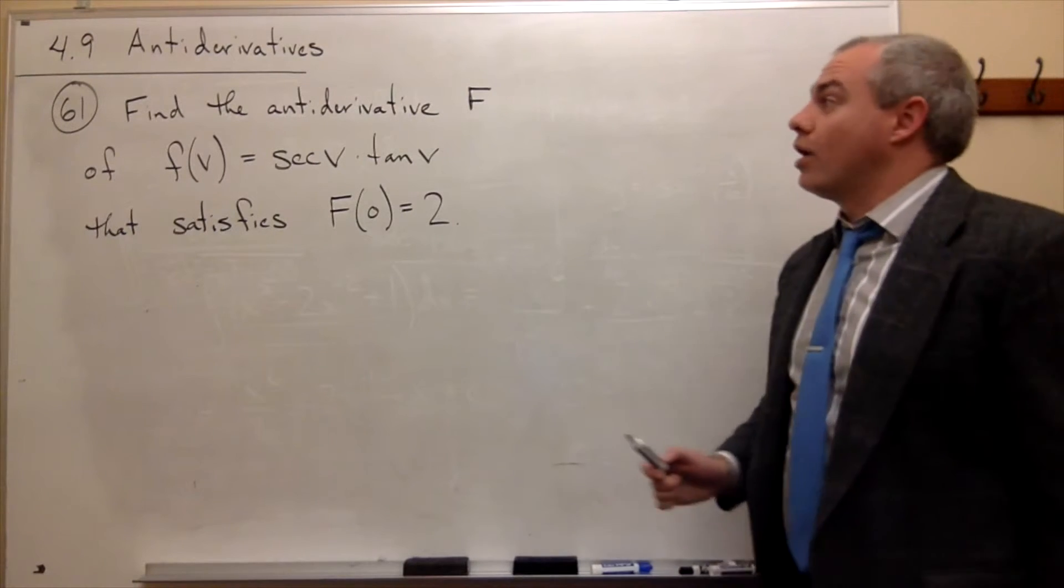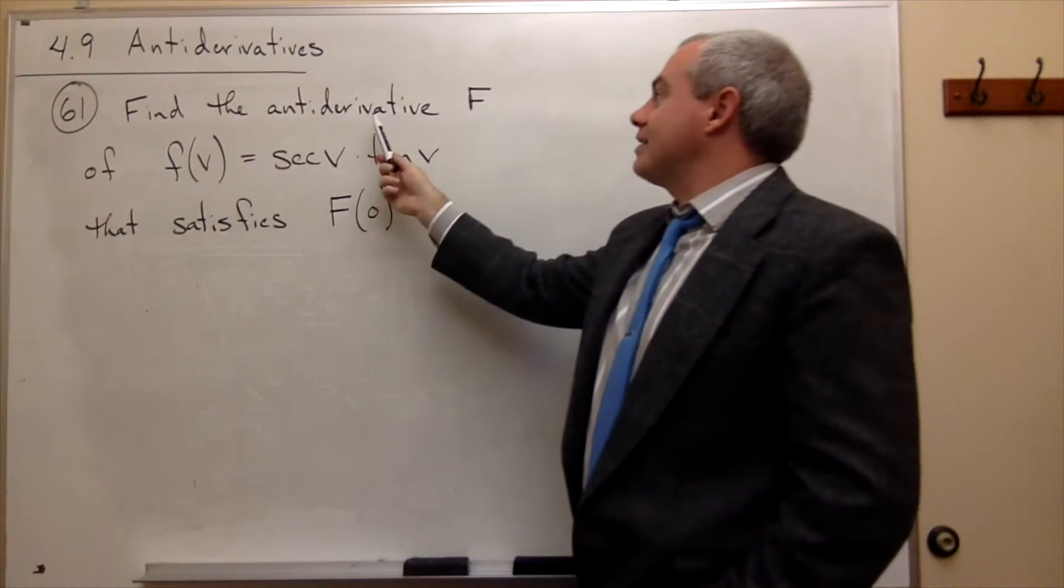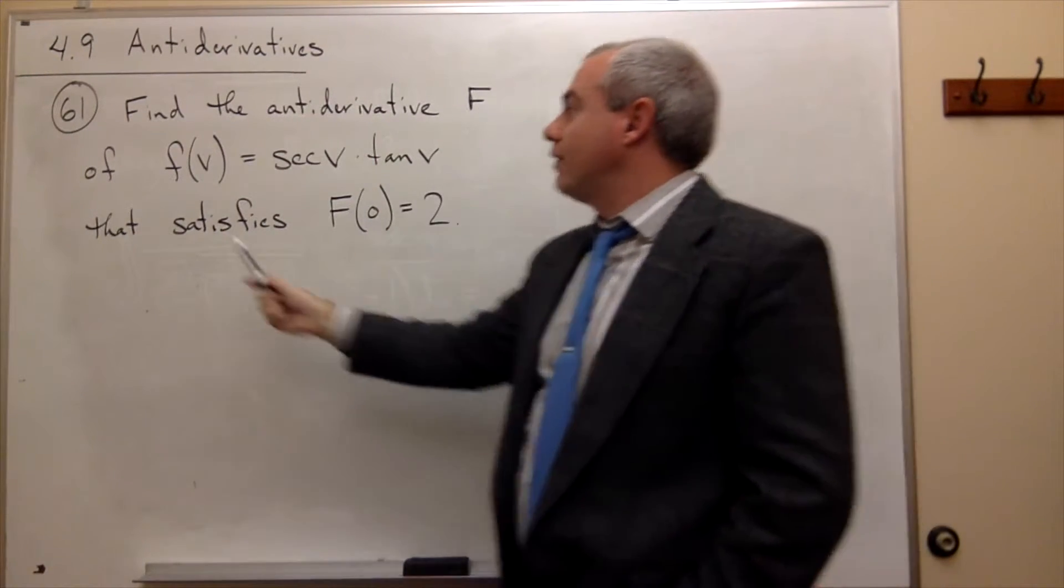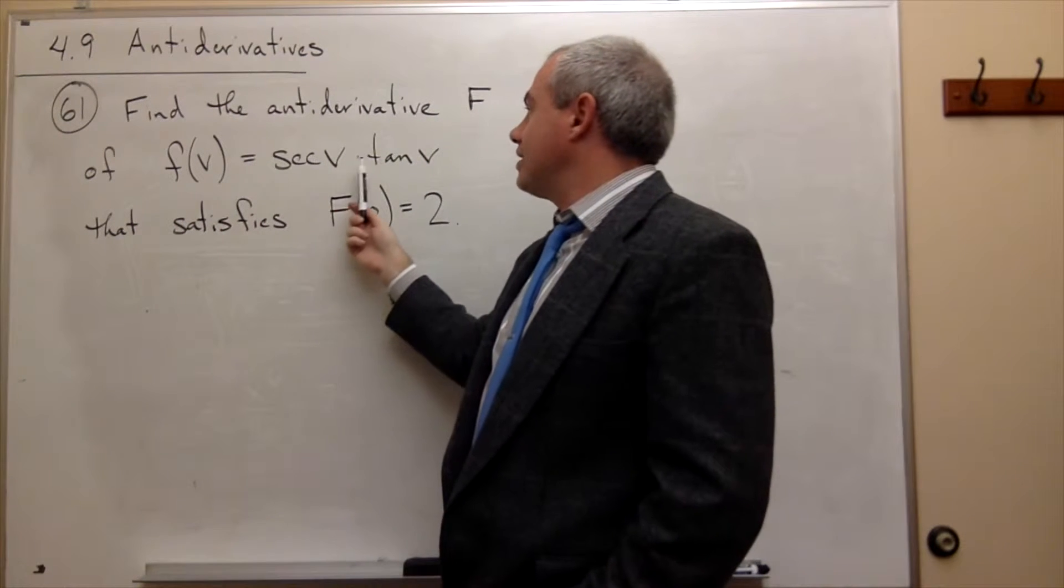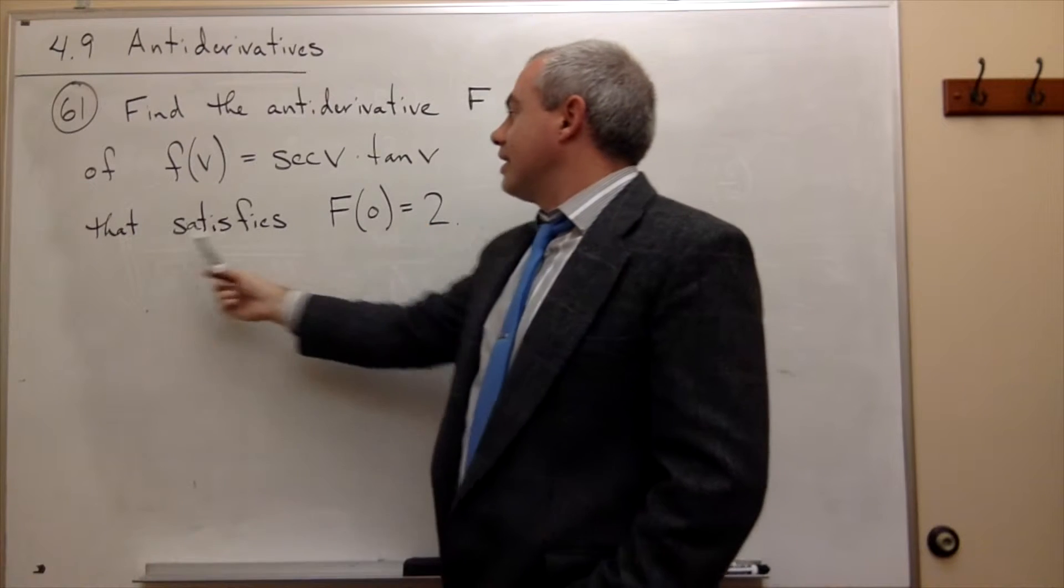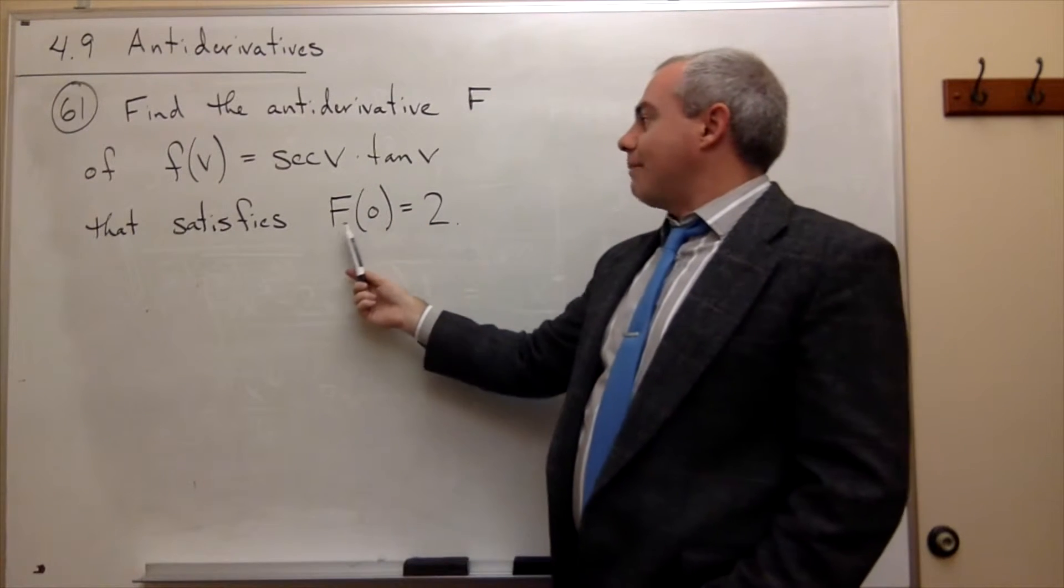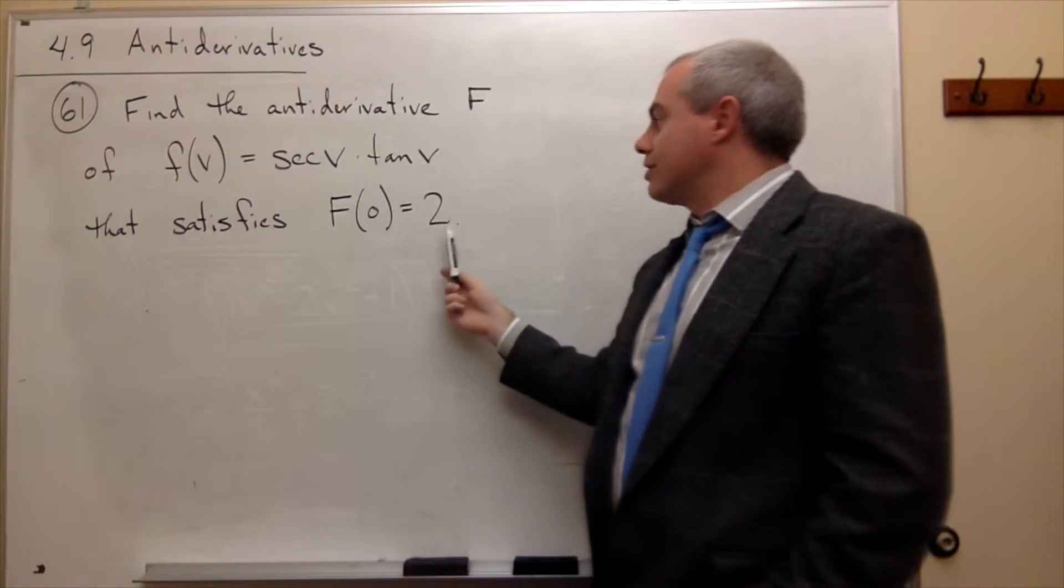In problem number 61, we'd like to find the antiderivative capital F of f(v) = sec v tan v that satisfies F(0) = 2.